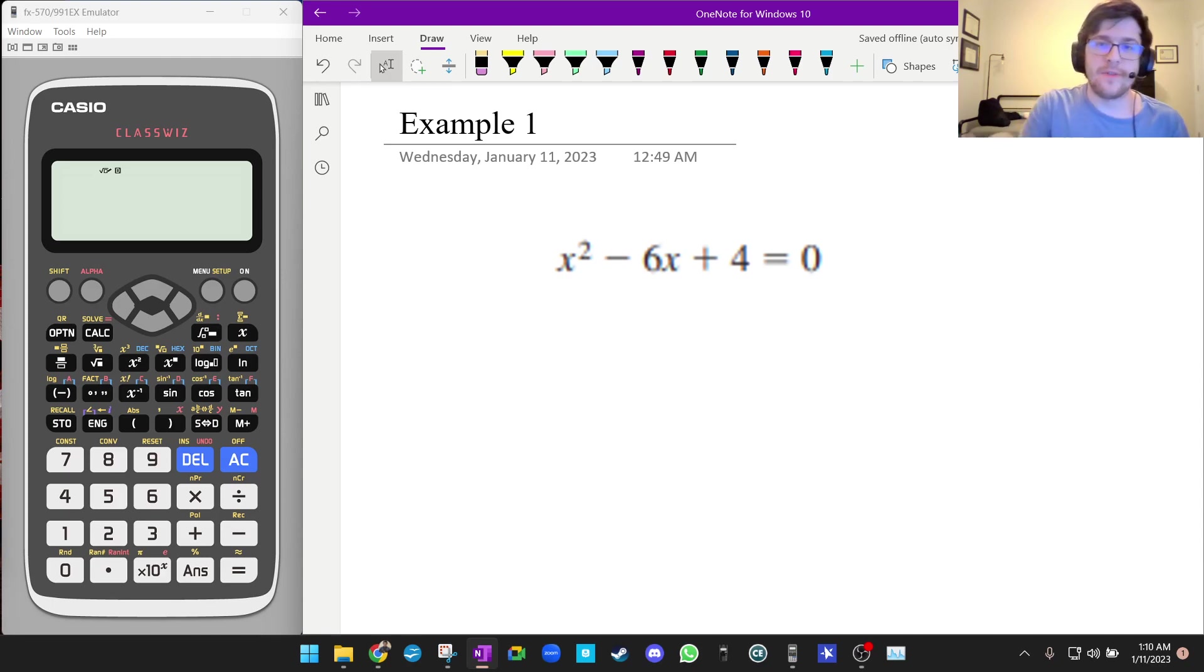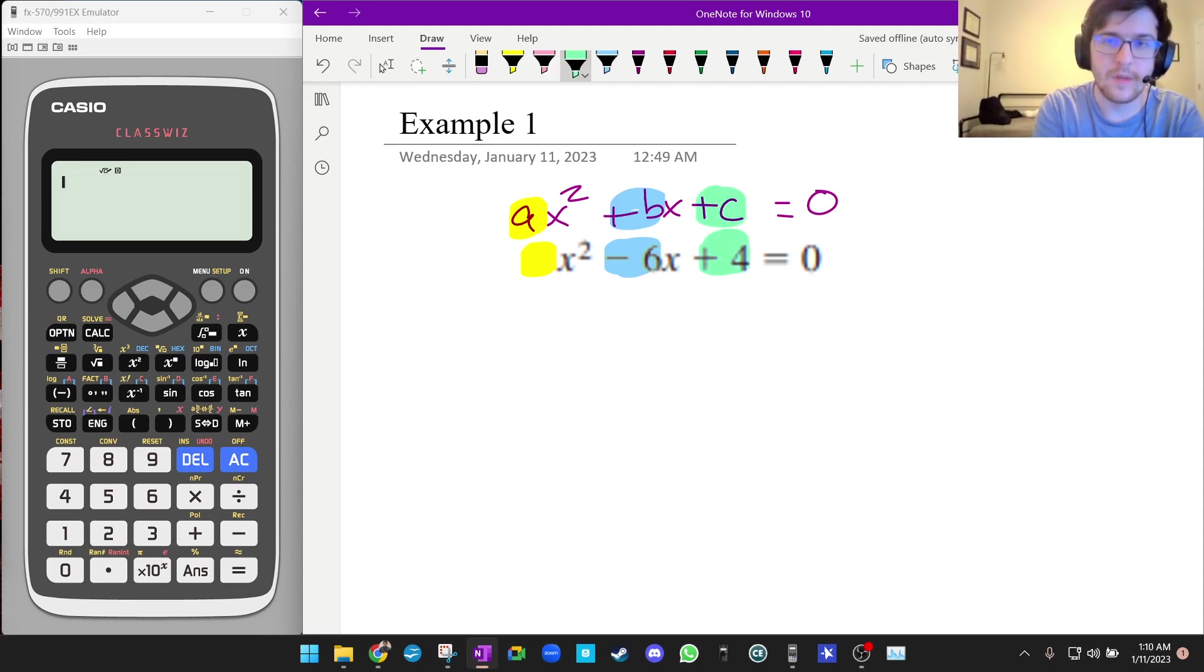First thing we're going to do to figure out the solutions to this question is hold the equation up next to ax² + bx + c = 0. Now I'm going to compare these to figure out what A, B, and C are. So A is 1, B is -6, and C is 4.